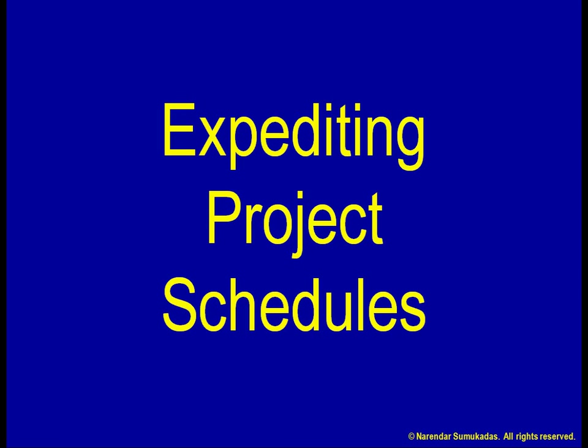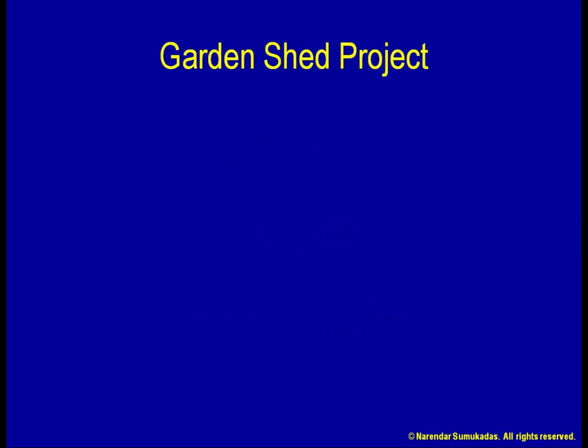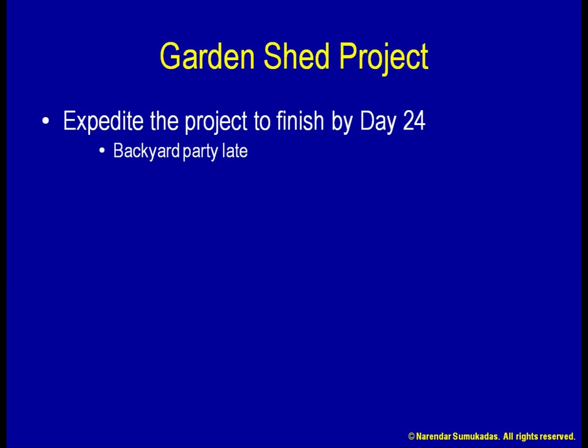Let us say I would like to finish my garden shed project quicker than the scheduled 28 days. I have planned a backyard party later in the month, so I would really like this project finished by day 24 at the latest. Moreover, for every day that the project is ongoing, I estimate that it costs me $50 in overhead costs, including my time and effort to oversee everything.